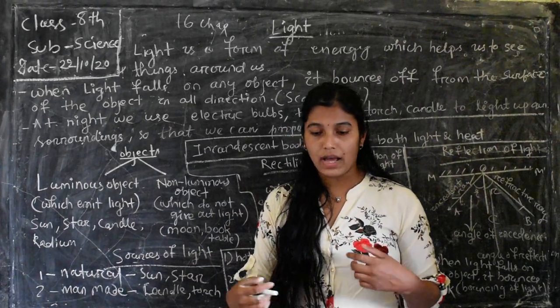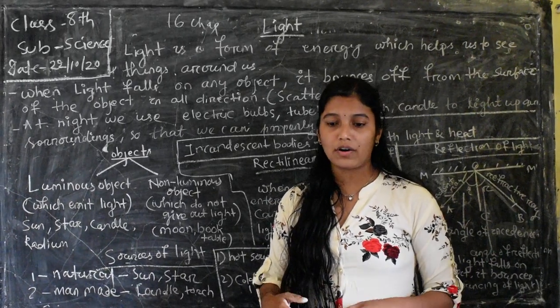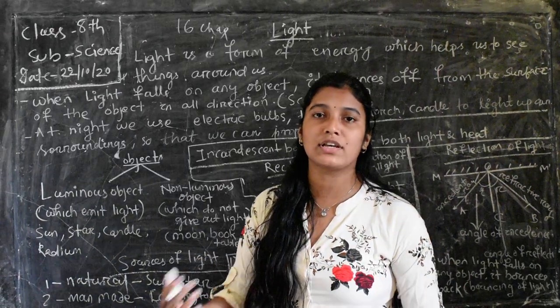At night we use many sources of light to see things because at night there is dark. We do not have any natural sources, so we have to use sources of light like torch, candle, electric bulb. At night we use electric bulb, tube light, torch, candle to light up the surrounding things to see them properly.